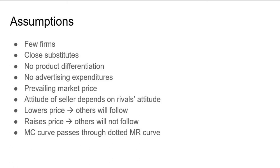Rather, rivals will stick to the prevailing price and cater to the customers leaving the price-raising seller. The last assumption is that the marginal cost curve passes through the dotted portion of the marginal revenue curve, so that changes in marginal cost do not affect price and output.